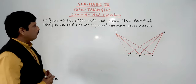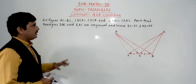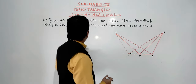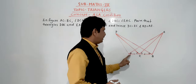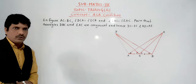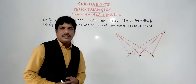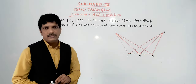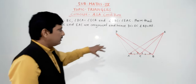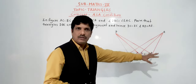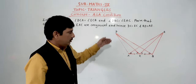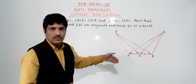Now, what are we being asked to show? We need to show triangles DEC and EAC are congruent. If we are going to use ASA criteria, we must have two angles and one included side. Two angles and the included side of one triangle must be equal to the corresponding two angles and one side of the other triangle.